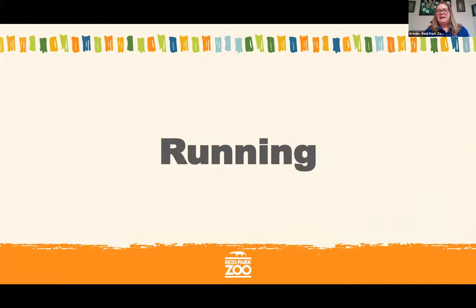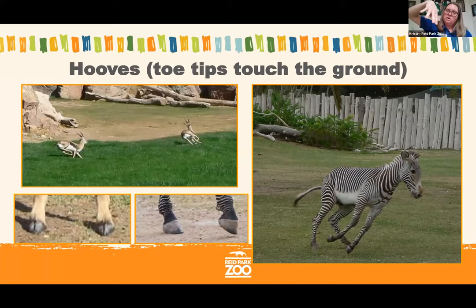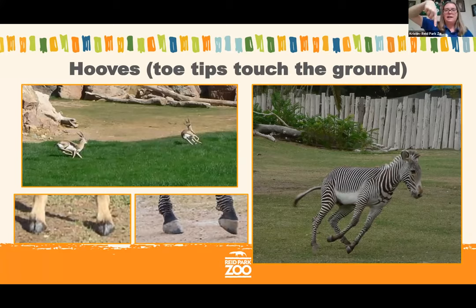The first type of movement we'll look at is running. Animals that run a lot or move very quickly have special features on their feet — one of which could be hooves. We have a Spekes gazelle and a zebra here on this slide. When an animal is walking on its hooves, it's actually walking on the very tips of its toes, which allows it to move faster because its feet aren't touching the ground as long. It could be walking on a single toe like the zebra, or two toes like the gazelle.